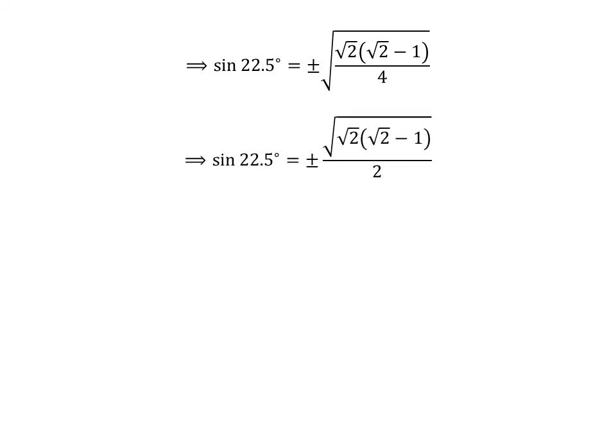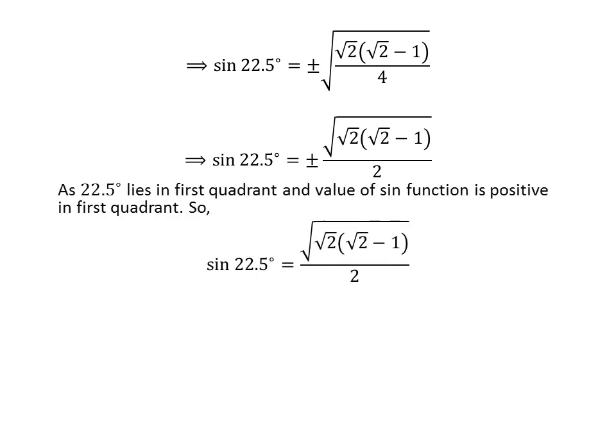As the square root of 4 is 2, sine of 22.5 degrees is equal to plus or minus the square root of square root of 2 times square root of 2 minus 1 upon 2. Since 22.5 degrees lies in the first quadrant, the value of the sine function is positive, so sine of 22.5 degrees is equal to the square root of square root of 2 times square root of 2 minus 1 upon 2.